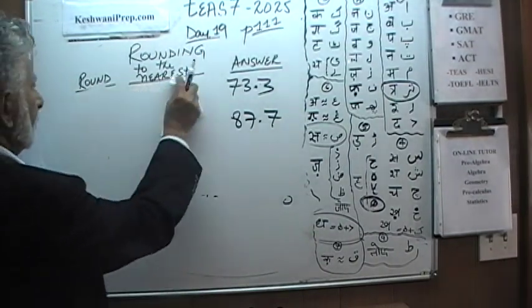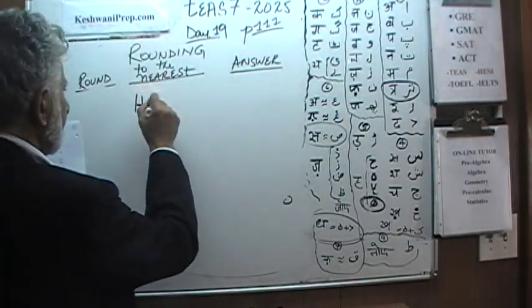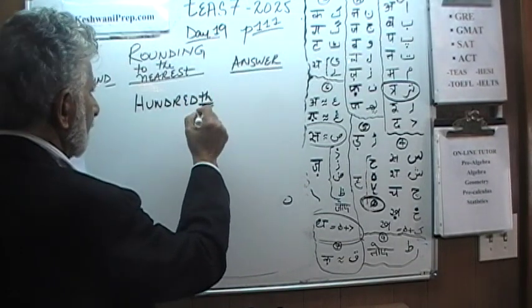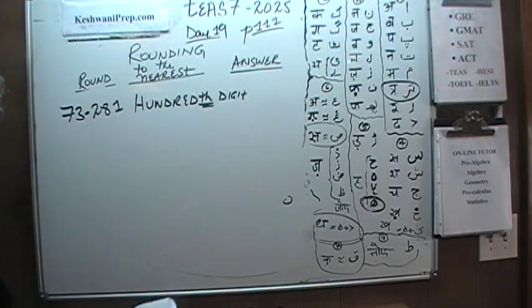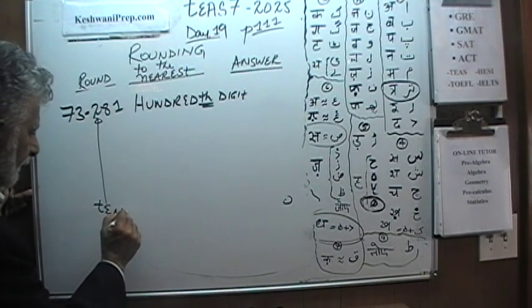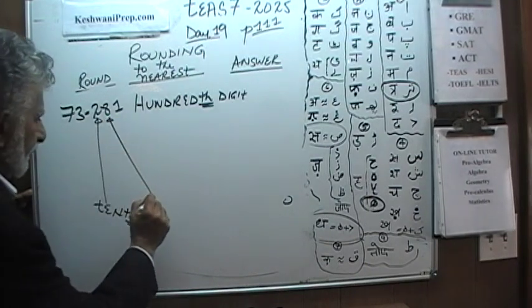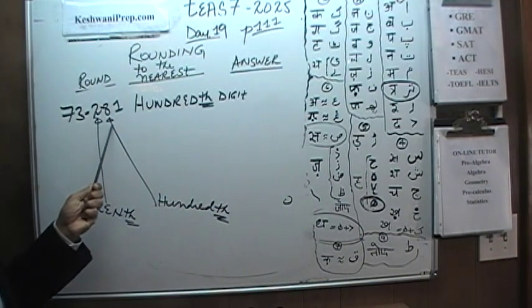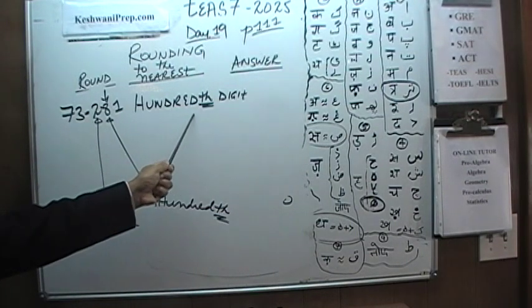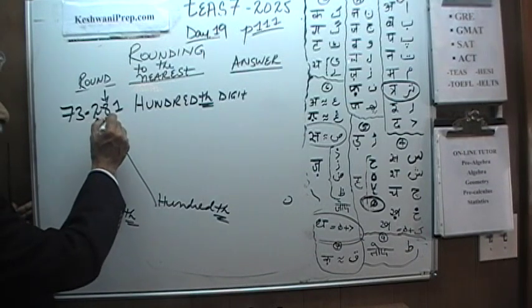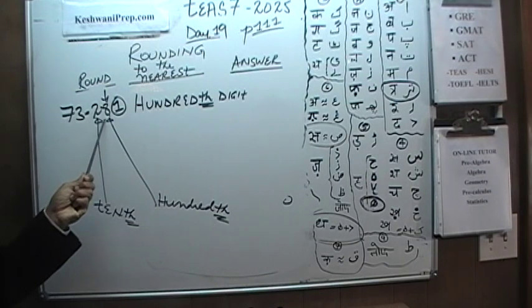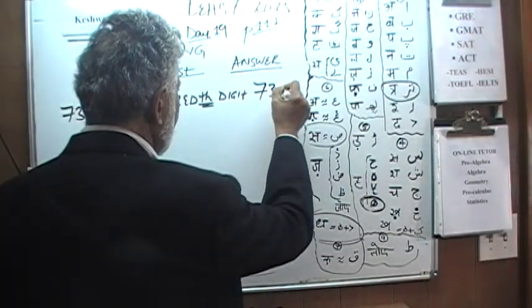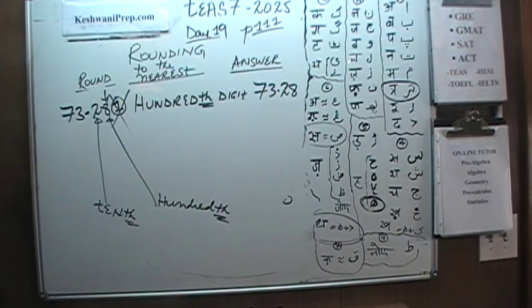Now we are going to round 73.281 to the nearest one hundredth. First we locate the hundredths digit — the 8. What comes after the hundredths digit is 1, and 1 is not equal to or more than 5. So nothing changes, the 8 remains 8, and 73.281 rounded to the nearest hundredth becomes 73.28 — we just drop that 1.